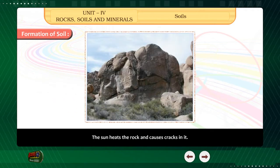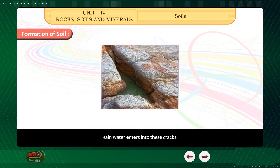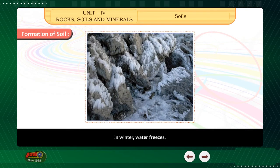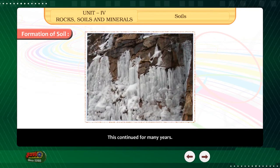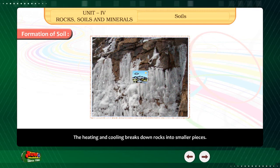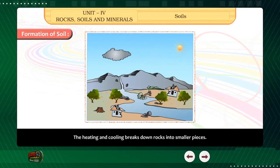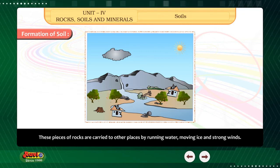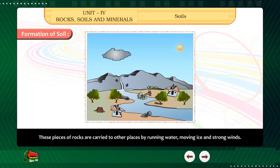The sun heats the rock and causes cracks in it. Rain water enters into these cracks. In winter, water freezes. This continued for many years. The heating and cooling breaks down rocks into smaller pieces. These pieces of rocks are carried to other places by running water, moving ice and strong winds. In this way, soil was formed.